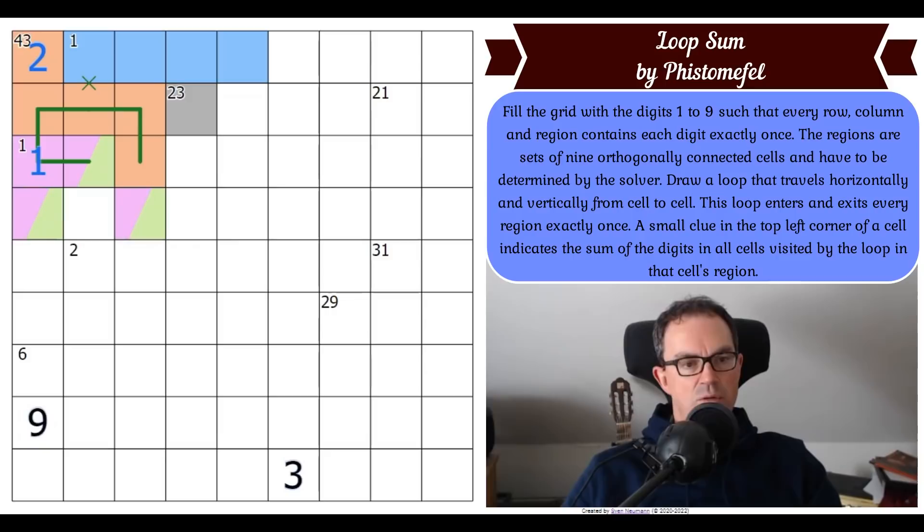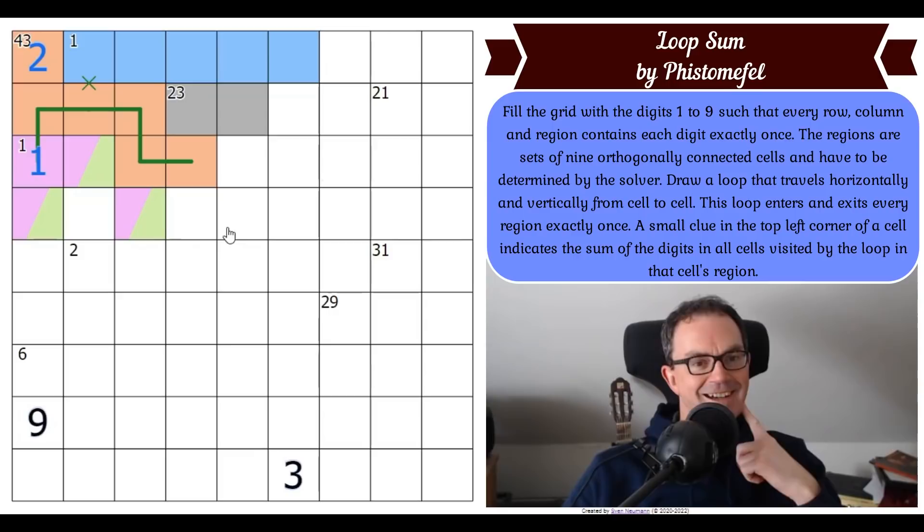So we've determined this cell is either green or purple - but certainly not orange. That means this square is orange, this is gray, this is blue, and we have to extend the loop again to here.